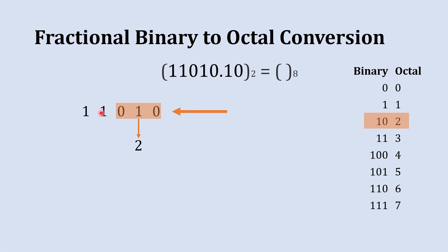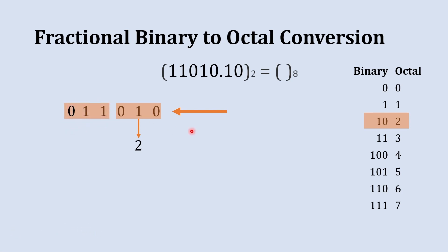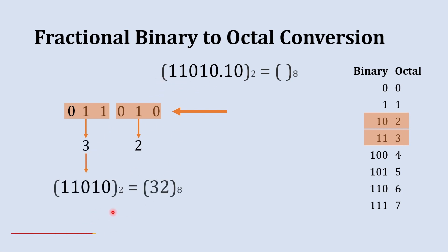The next group has only two digits remaining, so we are going to add one more 0 on the left-hand side — it will not create any impact on the value of this number. Now the group of three digits is 011. The octal equivalent to 011 is 3, so we write 3 below it. The octal equivalent to the whole binary number part is 32.